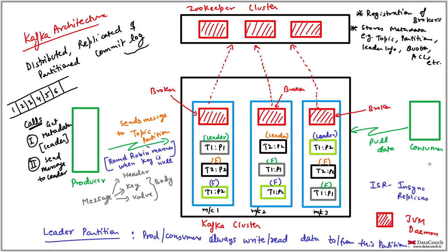One more thing: one of the brokers in the Kafka cluster will be the controller. The details of the controller are also stored in zookeeper. That broker controls the leader election process — if one broker goes down, the controller triggers leader re-election. If the controller itself goes down, another broker will become the controller. The overall architecture has many moving parts. Let's move to the hands-on portion of Kafka.